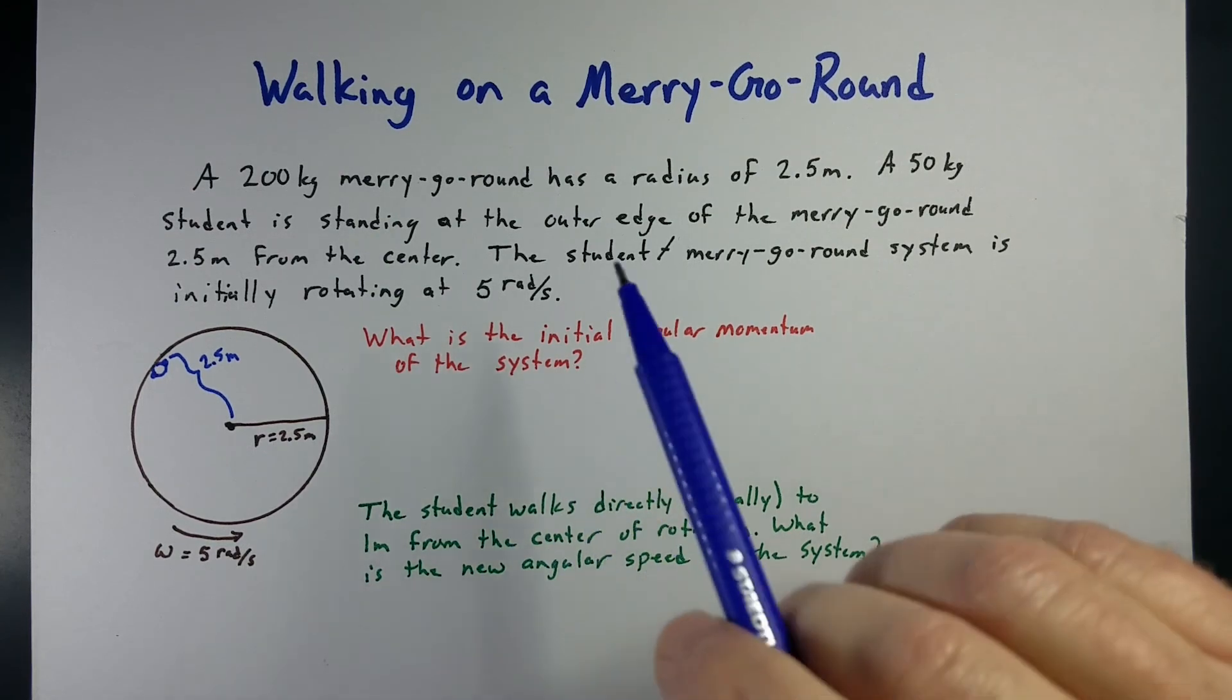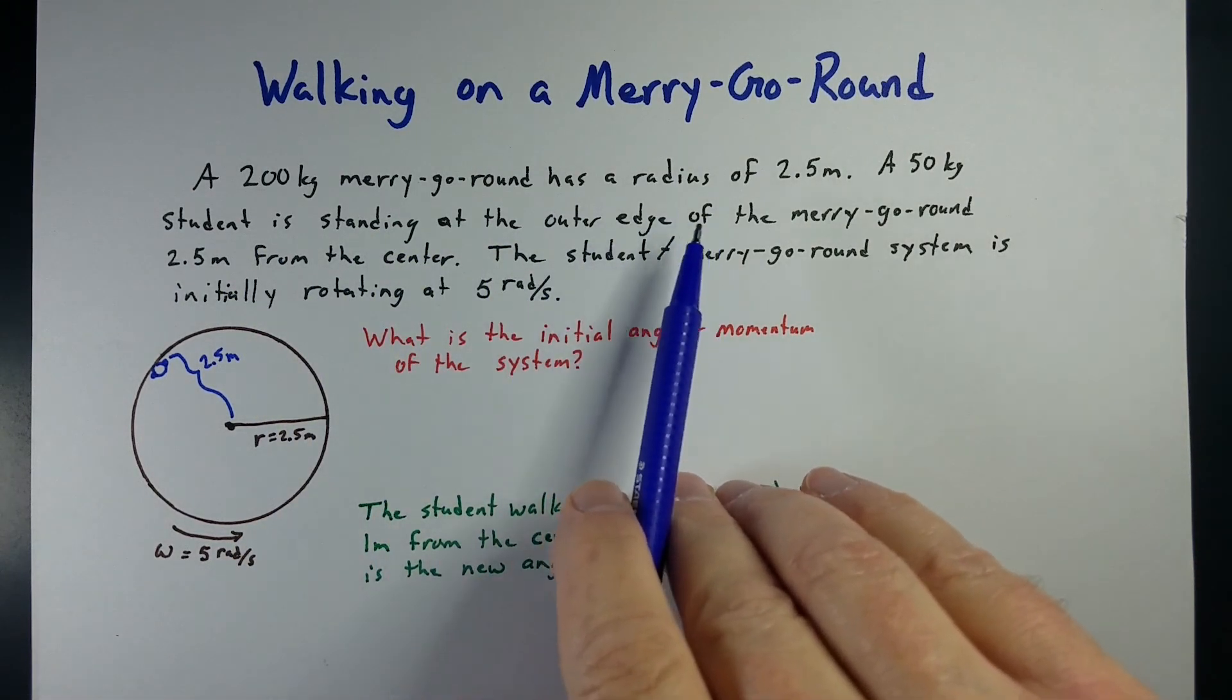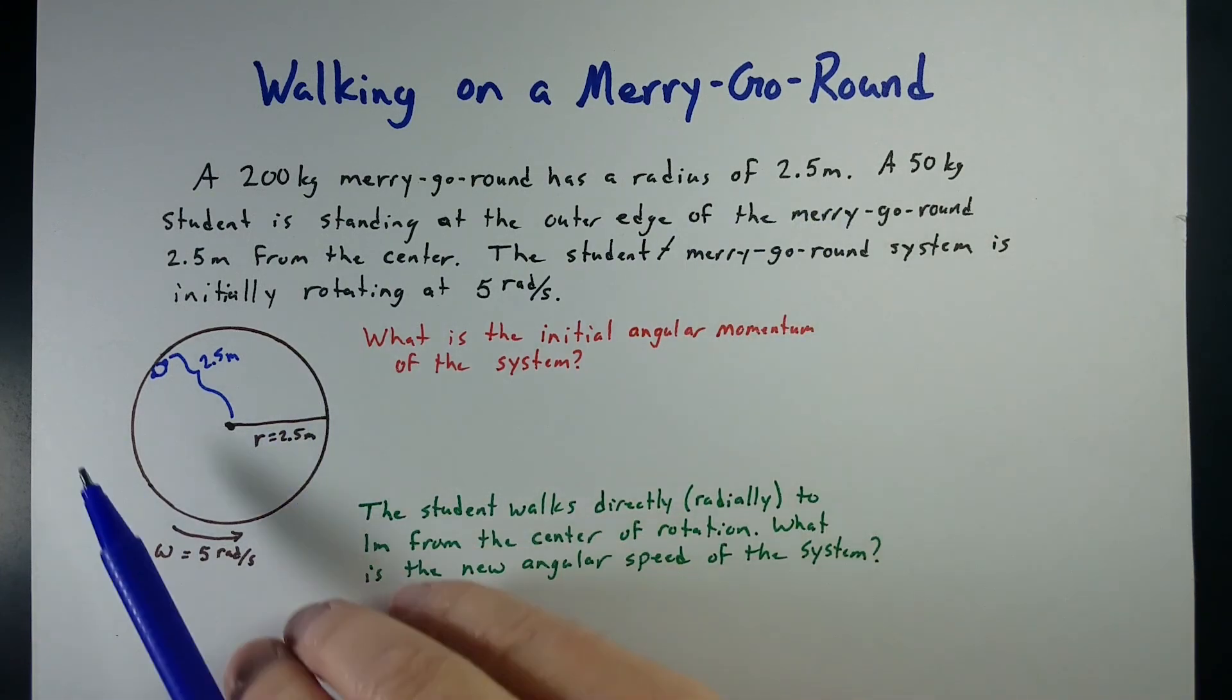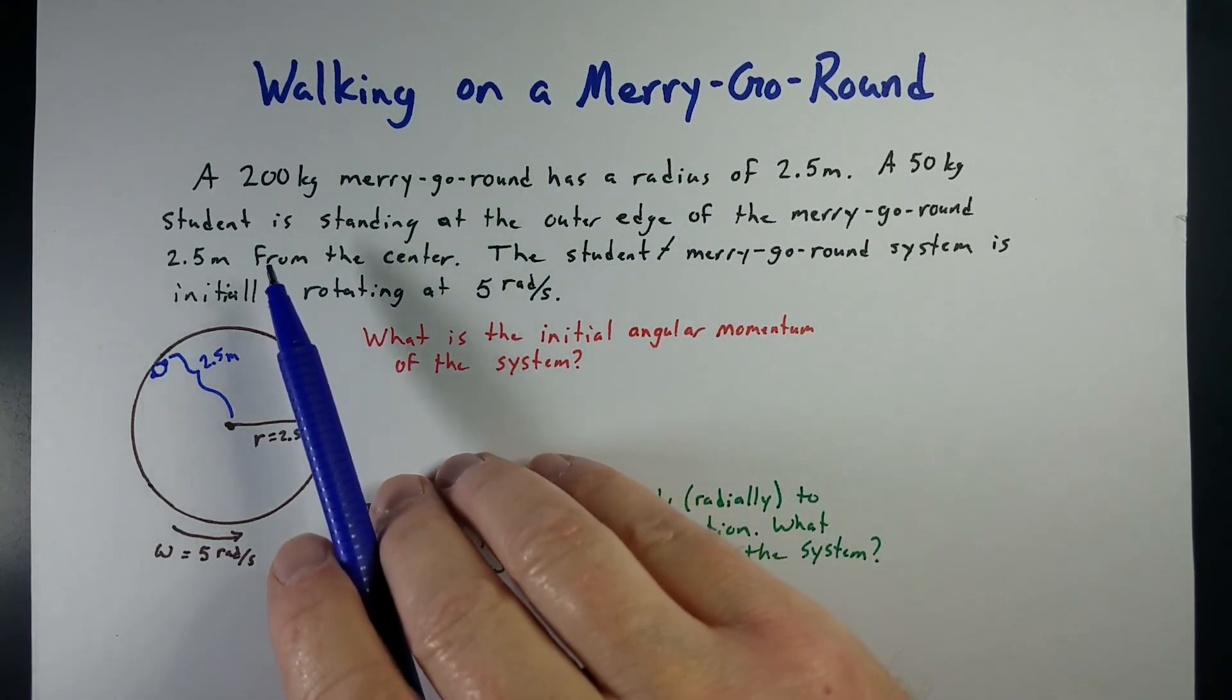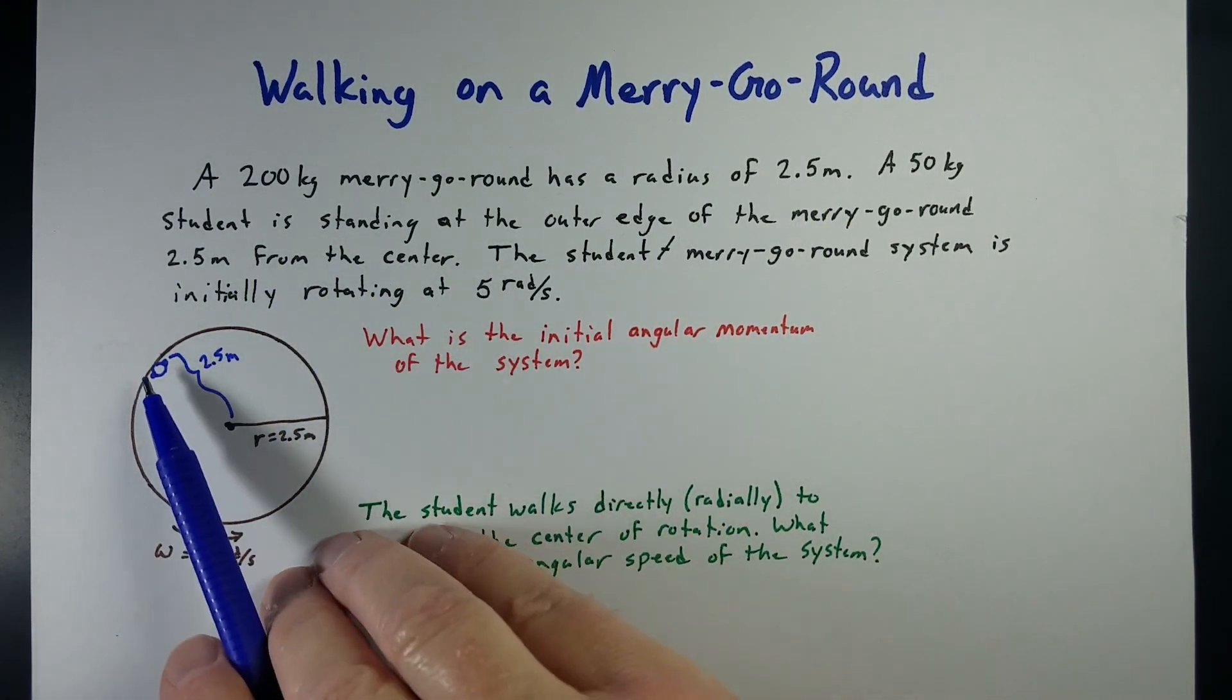So let's start with this. We've got a 200-kilogram merry-go-round with a radius of 2.5 meters, spinning around. A 50-kilogram student is standing at the edge.